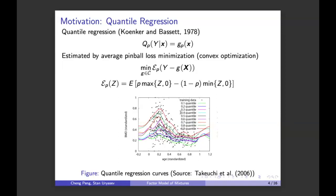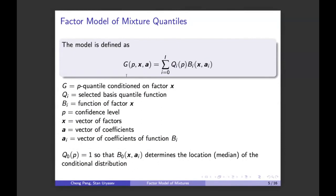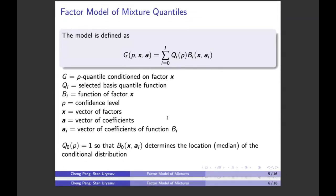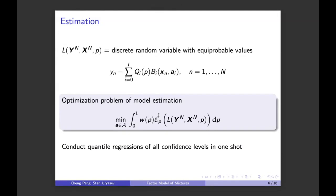People have been trying to solve this problem using, for example, rearrangement or adding hard constraints in joint optimization. We want to achieve non-crossing by design — the model should rule out this problem. Here's how we formulate our model: the p-th conditional quantile of the response variable Y conditioned on factor X is a weighted sum of some basis quantile functions Q sub i. It looks like latent class regression, but we are modeling the quantile function rather than the density.